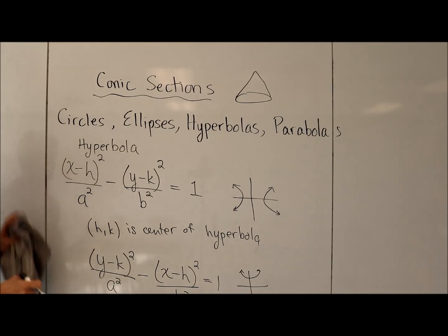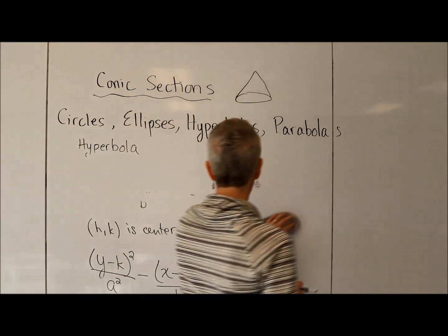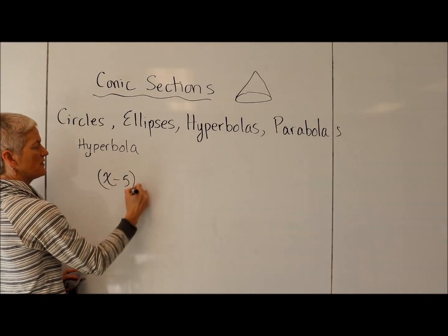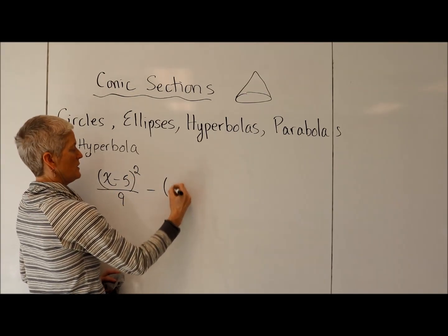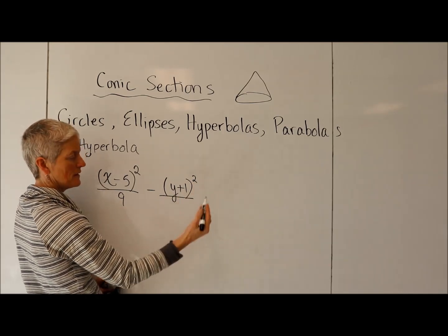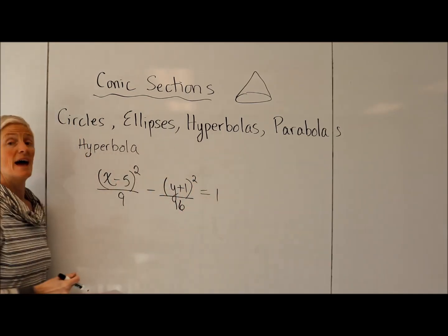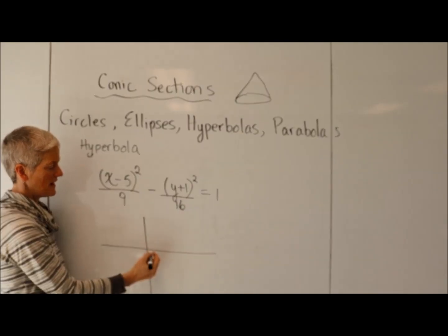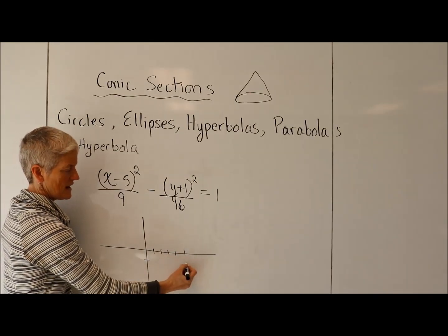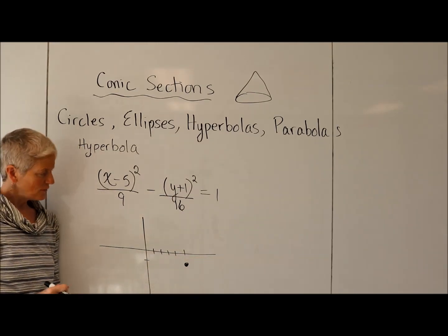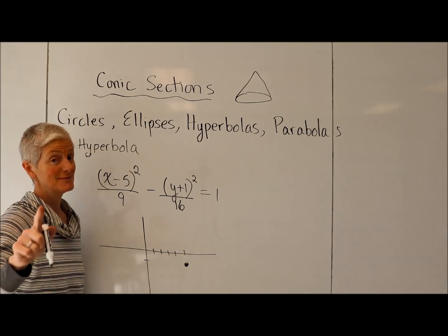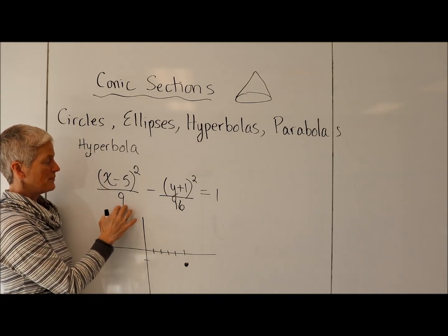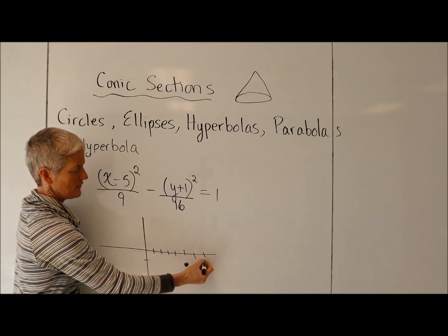Let's graph one of these just for fun. Let's say I had X minus 5 squared over 9, minus Y plus 1 squared over 16, equals 1. The center of my hyperbola is going to be at 5, negative 1. This is very similar to an ellipse. This is 9, so I'm going to go 3 to the right and 3 to the left from the center. I'm going to go up and down 4 from the center.